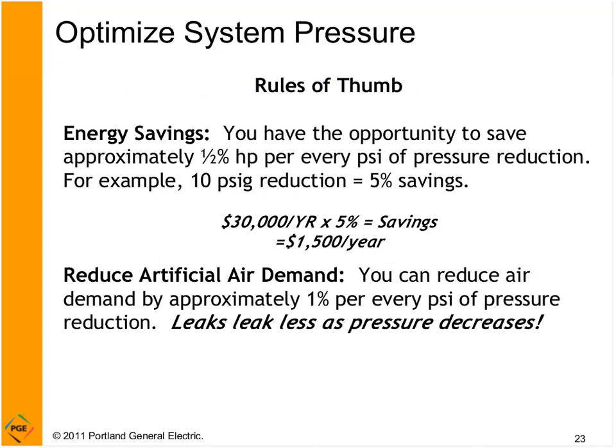Here's a useful rule of thumb: on average, your system will save about half a percent in horsepower for every PSI reduction. Just like climbing a mountain — don't climb to the top of Mount Hood to walk back down; just go to Meadows. The math: on a $30,000 per year 100 HP compressor, dropping 10 PSI saves about $1,500. It might take 10 minutes to adjust pressure set points — a very high-value action.